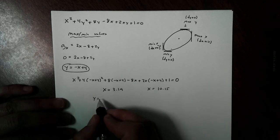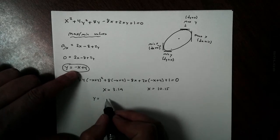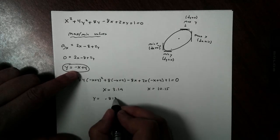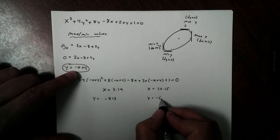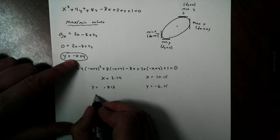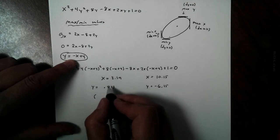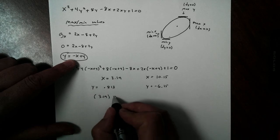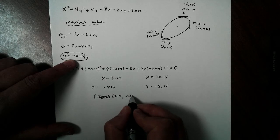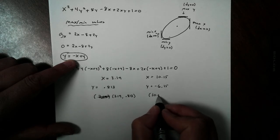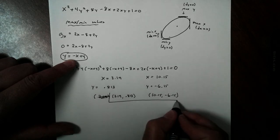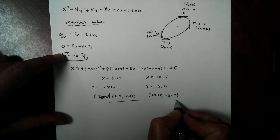To get their corresponding y values, we could just plug it back into our function. We would get y equals 0.813 here and y would equal negative 6.15. So our two points would be 3.19, 0.813 and 10.15, negative 6.15. These would be where my partial with respect to x is 0.